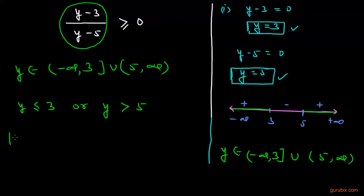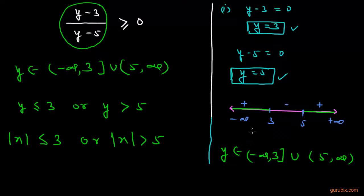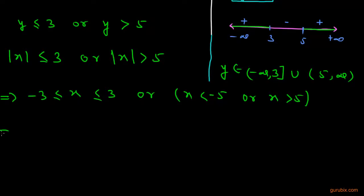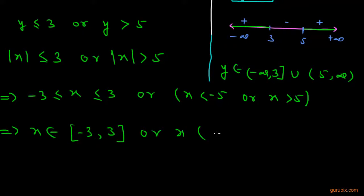This means mod x is less than or equal to 3, or mod x is greater than 5. The first condition implies x is greater than or equal to negative 3 and less than or equal to positive 3, so x belongs to the interval negative 3 to positive 3. The second condition gives x less than negative 5 or x greater than positive 5, so x belongs to negative infinity to negative 5, union 5 to positive infinity.